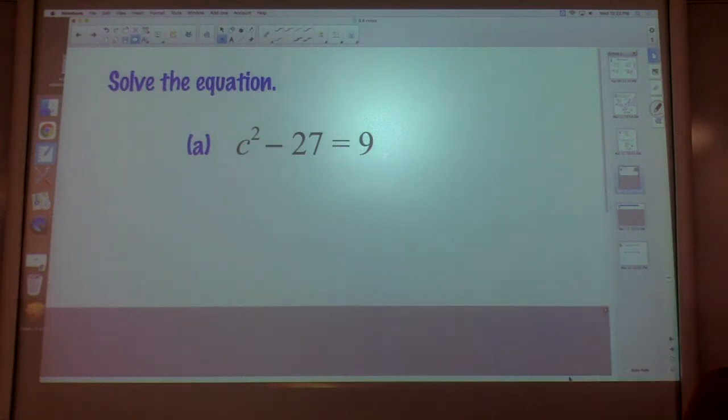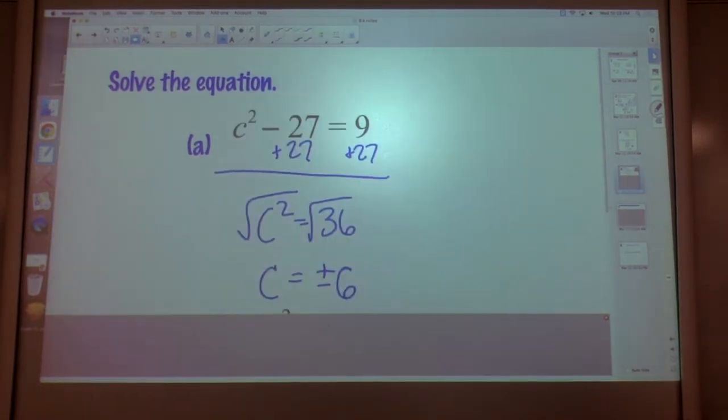C squared minus 27 equals 9. I'm going to pause it. You're going to pause it. And you're going to try these on your own. Don't cheat and just watch me do it because then you won't learn it. Try it out. See if you can get the right answer. Add 27. Square root. Don't forget there's two answers. C equals positive and negative 6.